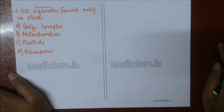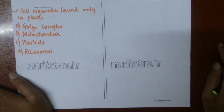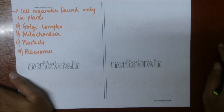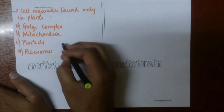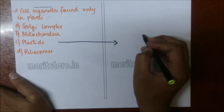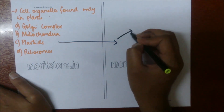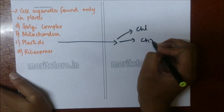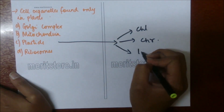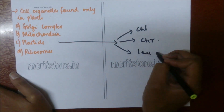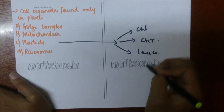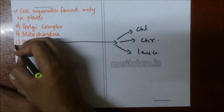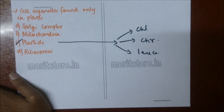Organelle found only in plants: A) Golgi complex, B) mitochondria, C) plastid, D) ribosomes. Golgi complex, mitochondria, and ribosomes are present in animals too, but plastids are found only in plants. Plastids consist of three types: chloroplast containing chlorophyll, chromoplast with other colors, and leukoplast with white color. So option C is the correct answer.